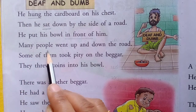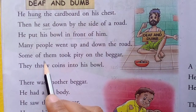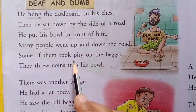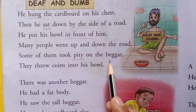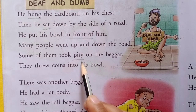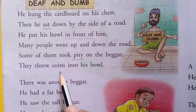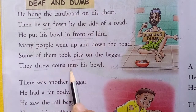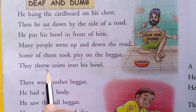Many people went up and down the road. Some of them took pity on the beggar — daya di khana. Pity ka arth hoga daya. They threw coins into his bowl. Throw ka past tense hai threw — fekna, fekte thye.